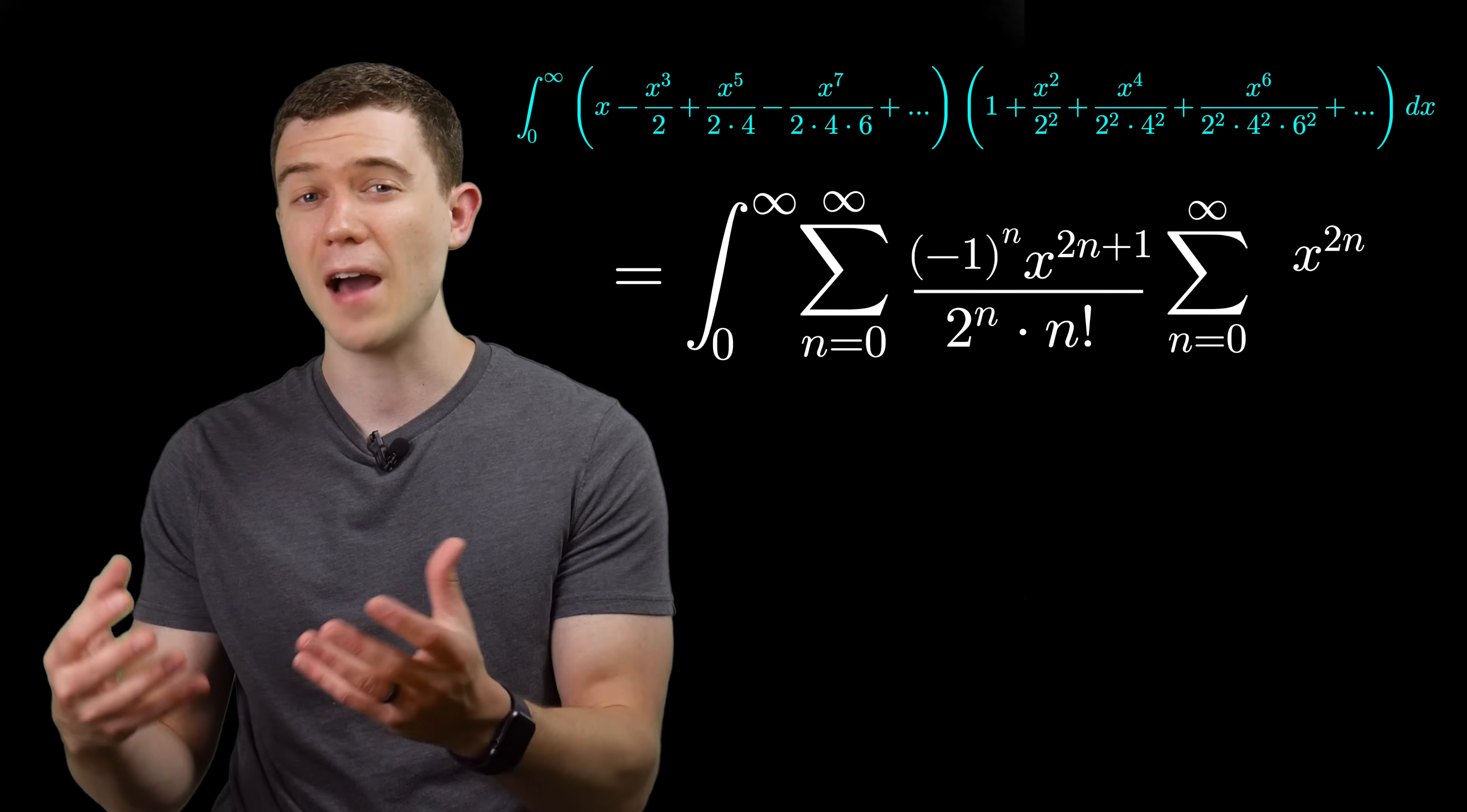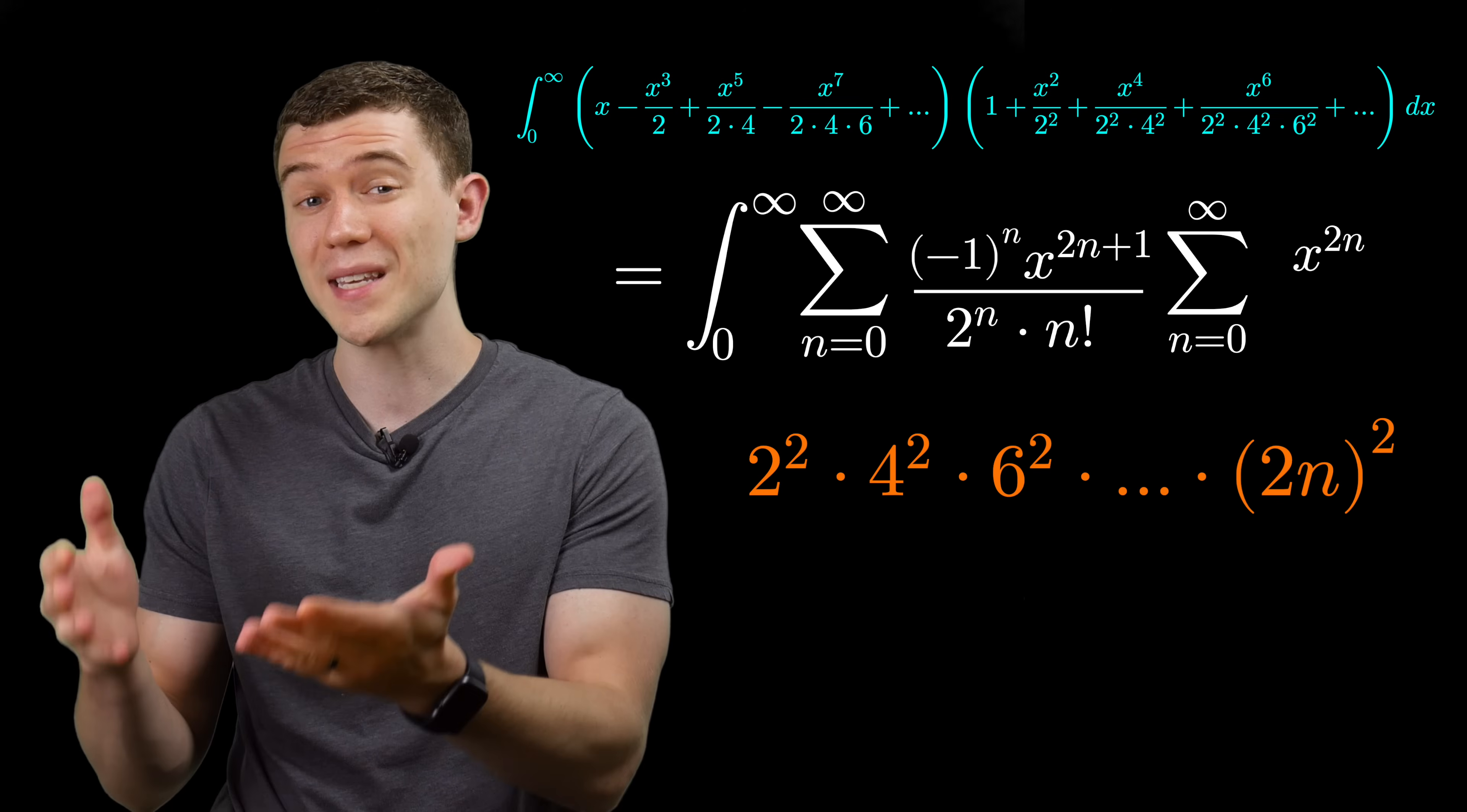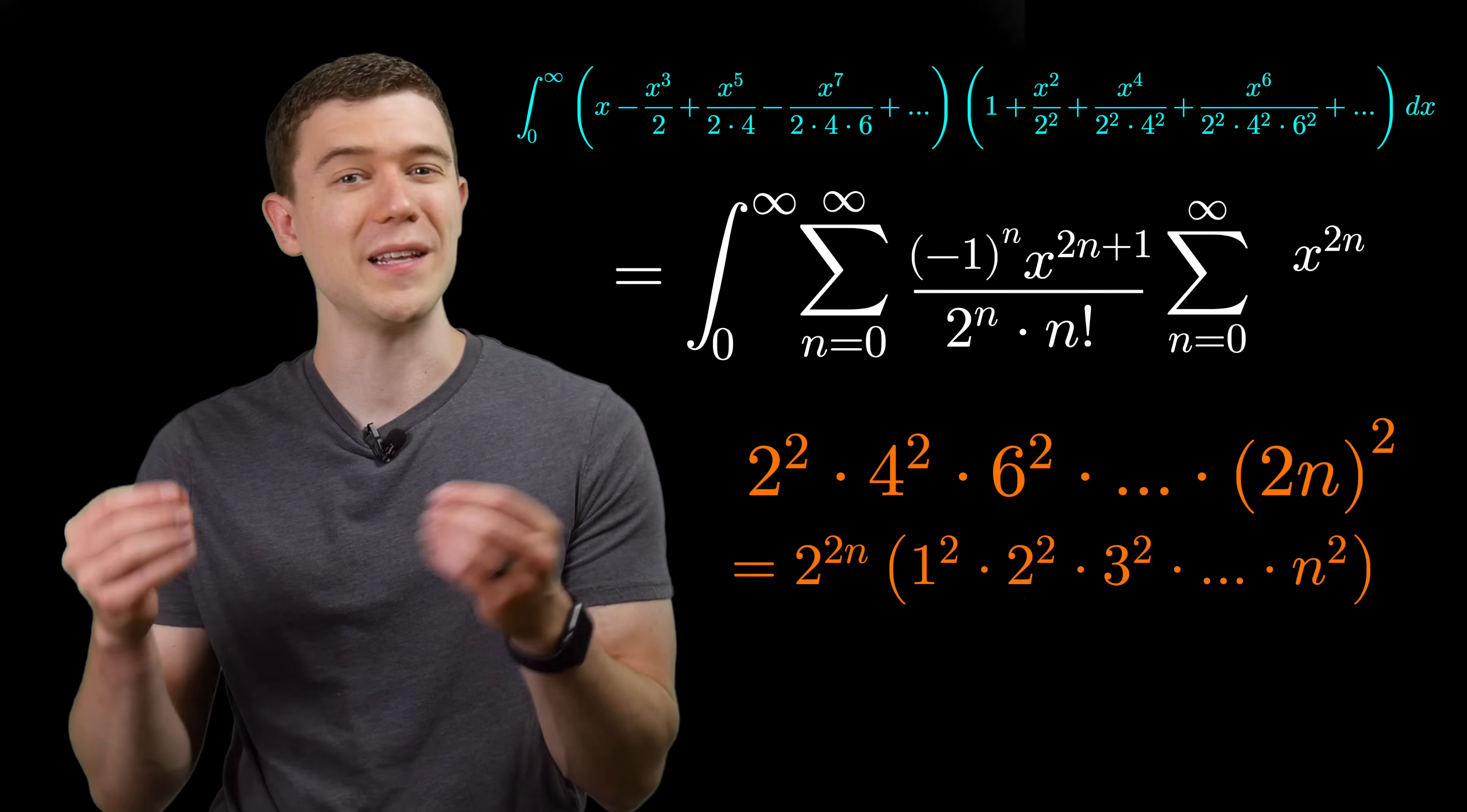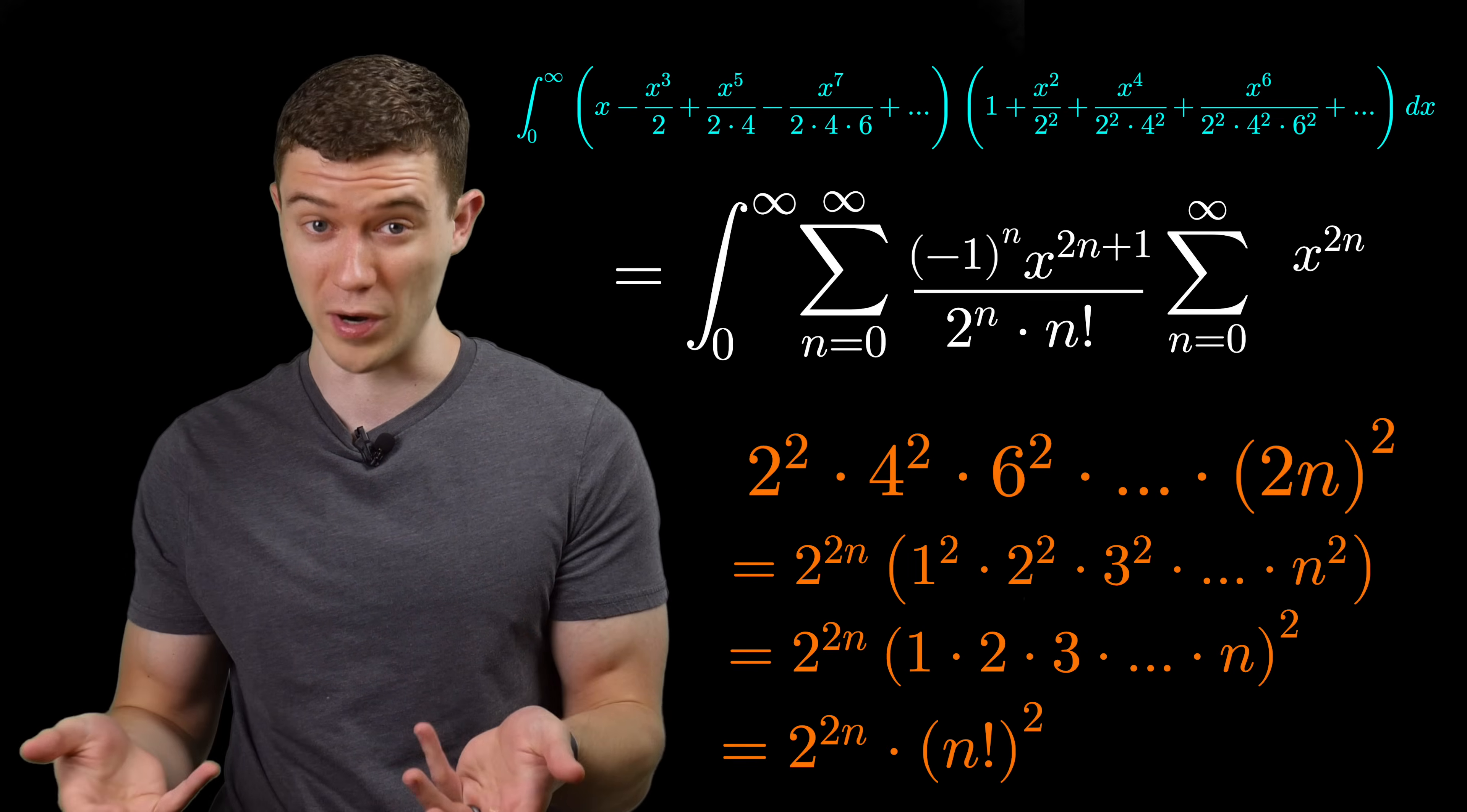If we write out the pattern in the denominator, it's 2 squared times 4 squared times 6 squared, all the way up to 2n squared. We can use the same idea as last time by factoring out a 2^n twice. Or in other words, factoring out a 2^(2n). And then what are we left with inside the parentheses? 1 squared times 2 squared times 3 squared all the way up to n squared. That's actually n factorial all squared.